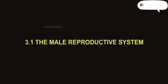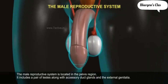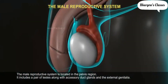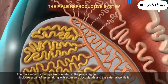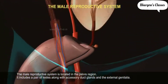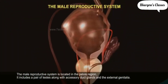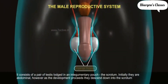The male reproductive system is located in the pelvis region. It includes a pair of testes along with accessory ducts, glands, and the external genitalia. It consists of a pair of testes lodged in an integumentary pouch called the scrotum.